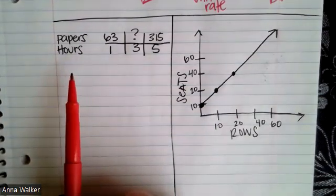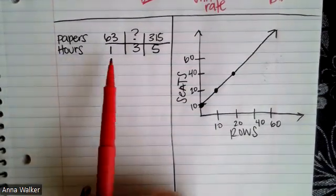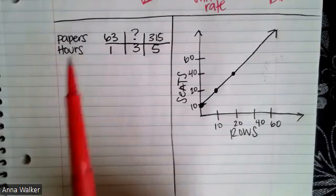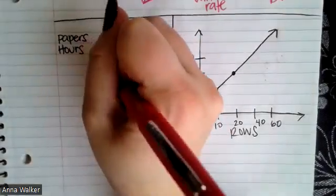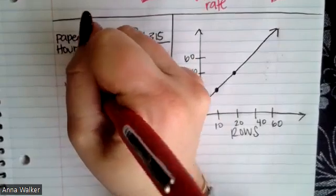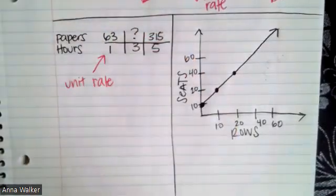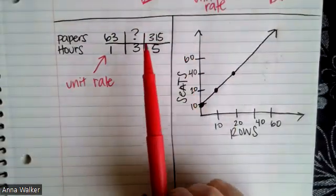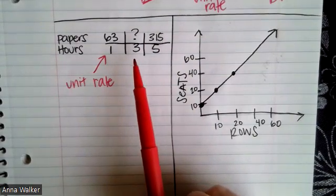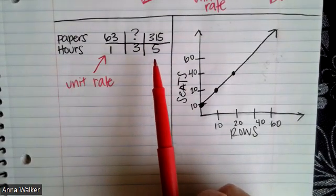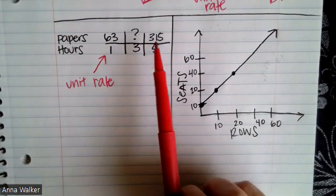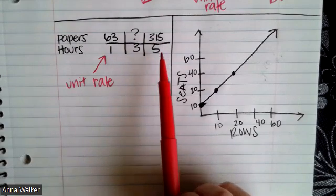Let's pretend that this is someone delivering newspapers and in one hour they can deliver 63 papers. So they already tell us the unit rate. In one hour they can deliver 63 papers. They are curious how many papers they can deliver in three hours, but we also know that they can deliver 315 papers in five hours.